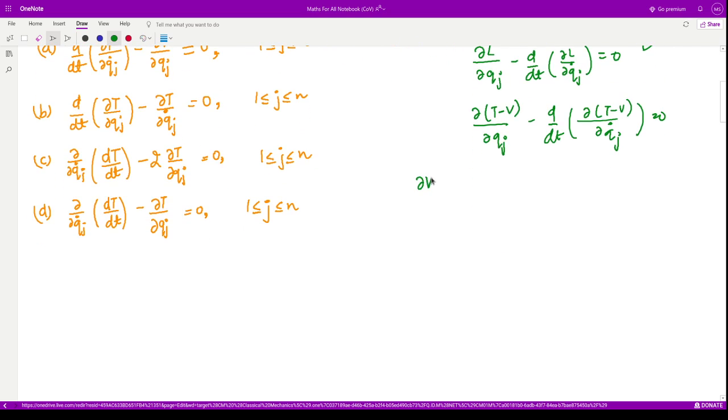We will get ∂T/∂qj minus d/dt(∂T/∂qj dot) equals minus ∂V/∂qj minus d/dt(∂V/∂qj dot).